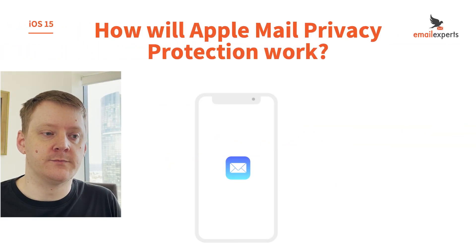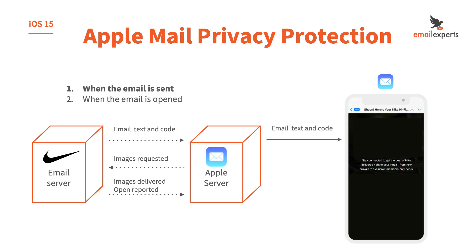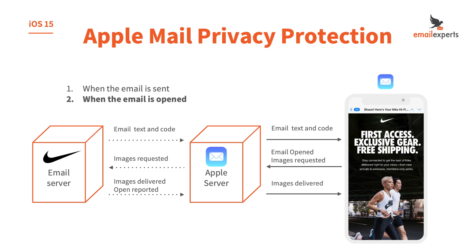So how is the new update from Apple different? The sequence of events happens in a different order. The email server sends the text and code of the email to the Apple server. However, before Apple sends the email content to the app on your phone, Apple immediately requests the images from the email server and hides the fact that it's being requested from an Apple Mail customer. The email server sends those images, and the server then reports the email as opened — even though the customer hasn't even received the content yet. Only then does the Apple server send the email to the customer's app. From this point, the email server doesn't receive any additional open information. When the customer opens the email and images load, images are requested from the Apple server directly, which already has the images, and delivers them without the email server being aware. It's designed specifically to hide if and when the email is opened.